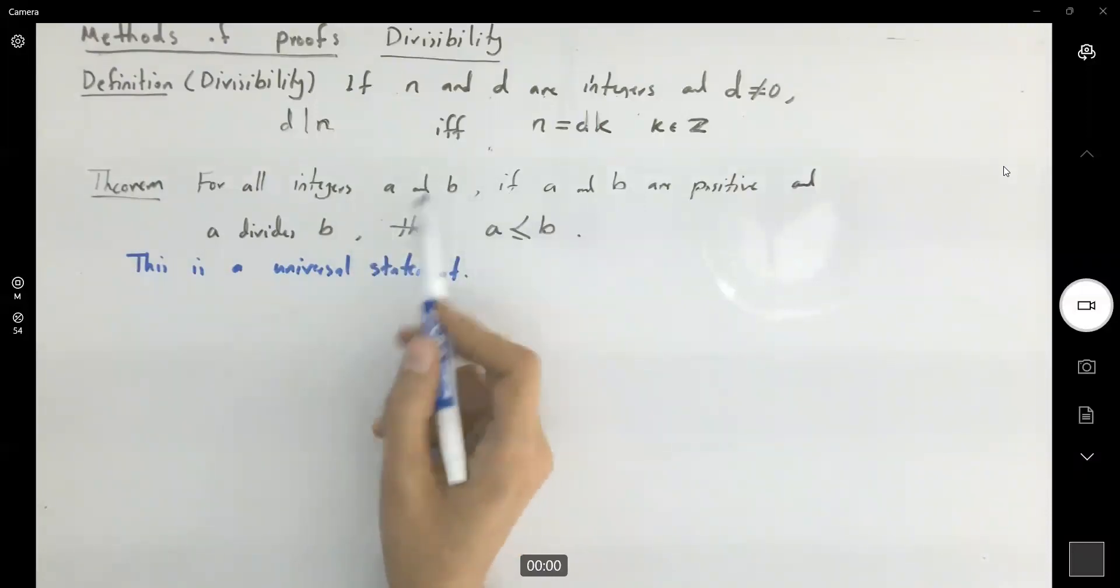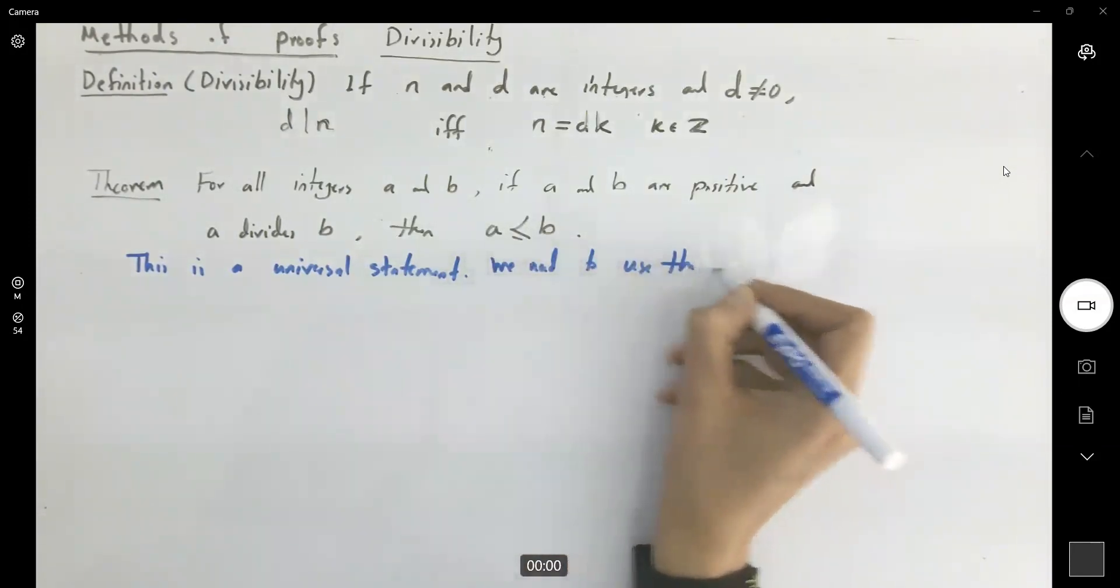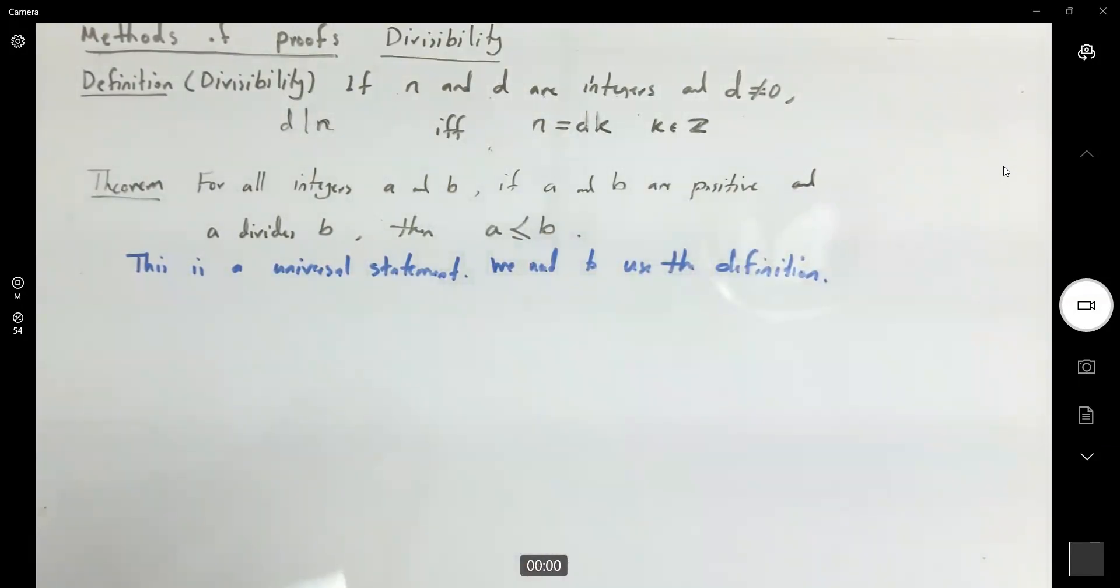So how do I define all integers? Should I take random integers? It's not correct if you take random integers. Just make sure you are not taking random integers. You need to use the definition. So what's the definition? The very first one is you have the integers. They are positive. a divides b.